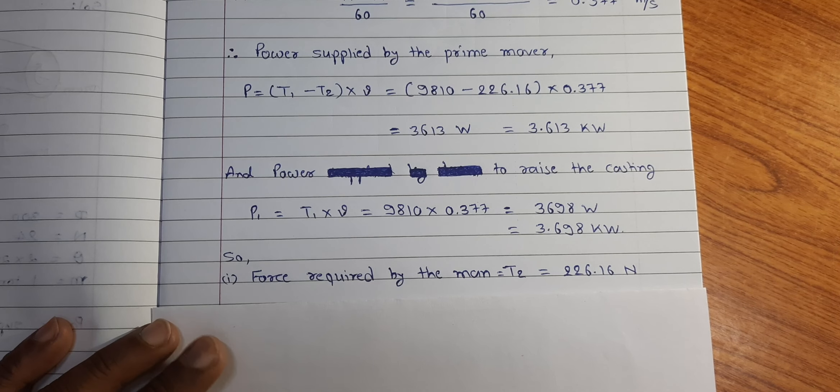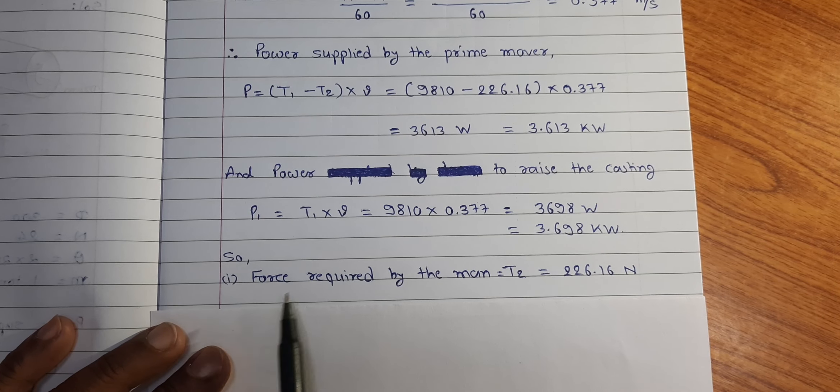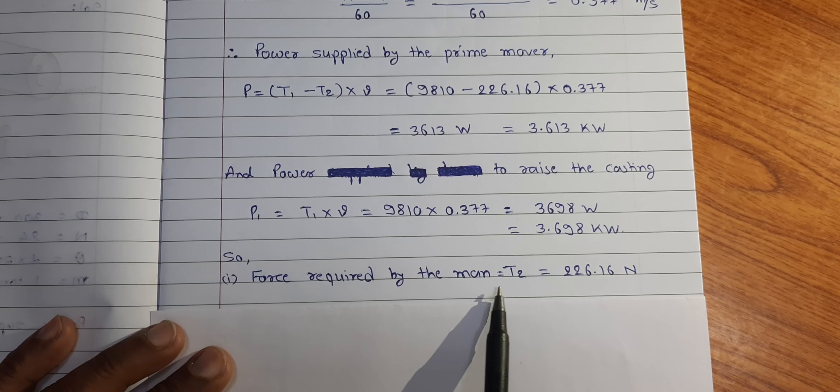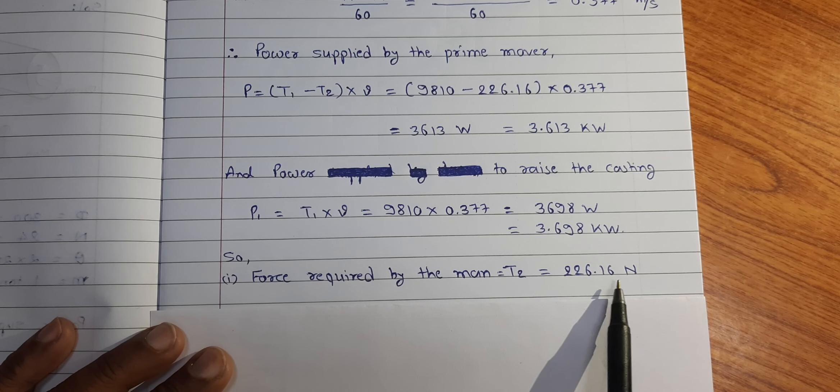Now we can write the three answers to the questions. One, force required by the man T2 is equal to 226.16 N.